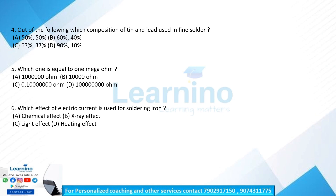Question: which one is equal to 1 mega ohm? Options are given. 1 mega ohm is equal to 10 raise to 6 ohms. Option A is the correct answer — 1 mega ohm equals 10⁶ ohm.